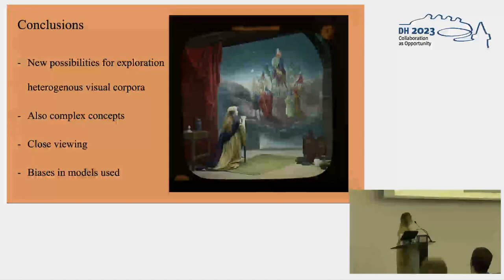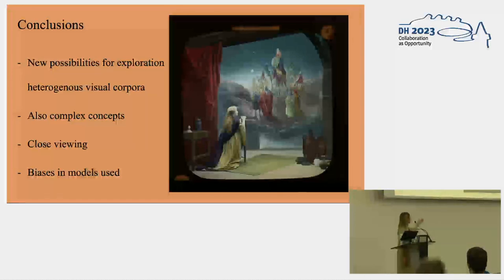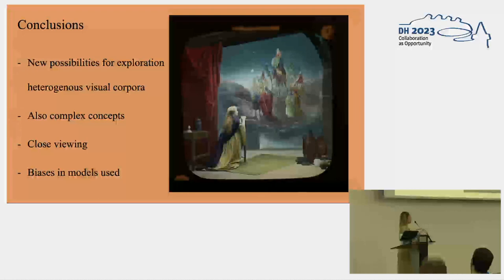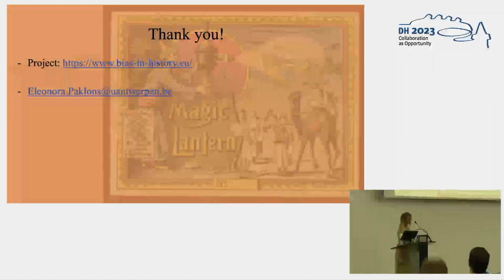CLIP and multimodal models really offer new possibilities for exploration of very mixed data such as magic lantern slides and heterogeneous visual corpora in general. It also allows us to get a sense of complex concepts such as holiness. At the same time it also leads to interesting close viewings — for instance, we have an image which mixes illustration and photography, and we see a tendency to portray temporary life on Earth through photographs while more eternal and everlasting concepts are portrayed through illustration, as with a wise man following the star to find Jesus. We need to be aware of biases in the models we use. For more information you can check out the project website or contact me. Thank you very much.